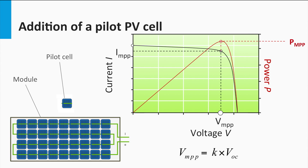A slight modification to this method can help in overcoming this apparent drawback. This involves the inclusion of a pilot PV cell that is highly matched with the rest of the PV cells that constitute the PV module. The idea here is that the lone pilot PV cell receives the same illumination as the rest of the PV module, and a measurement of the pilot PV cell also gives an accurate representation of the PV module under consideration.